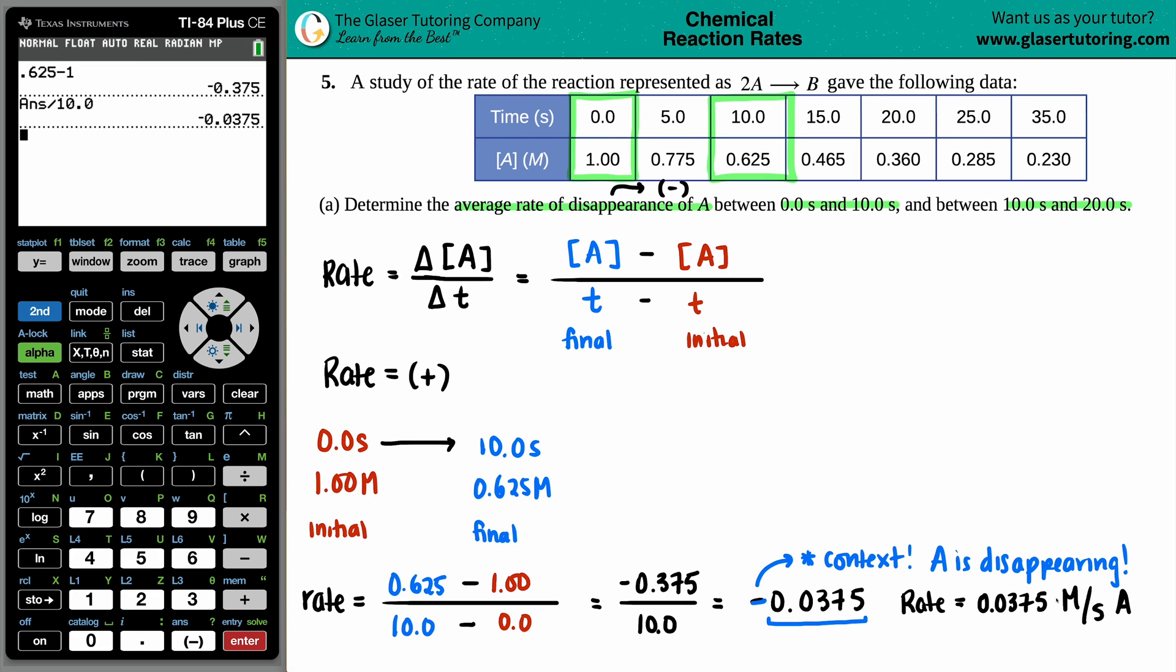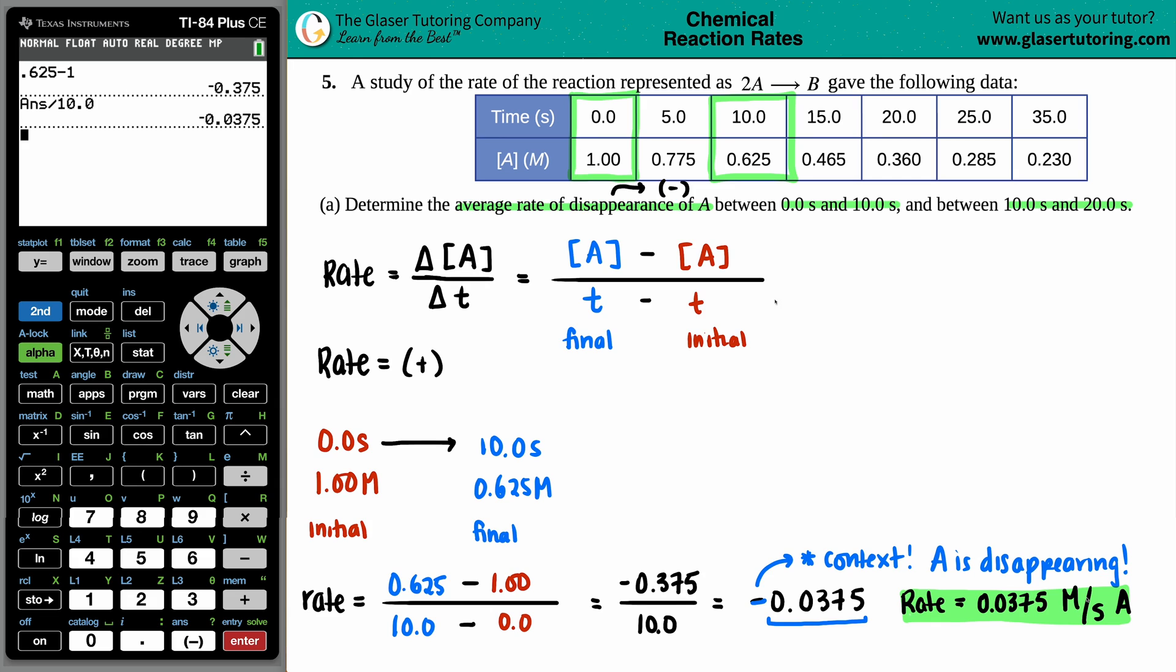That's the answer to the first part. The rate between 0 and 10 seconds is 0.0375 molarity per second. That means A is disappearing 0.0375 molarity every second. Now we do the same thing for the second part: 10.0 seconds to 20.0 seconds.